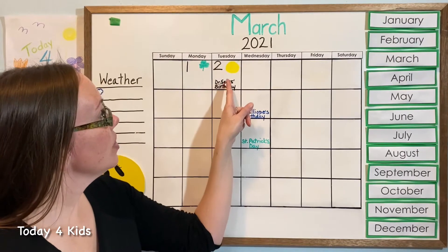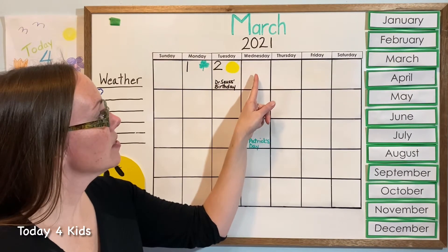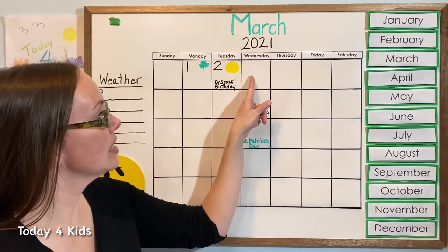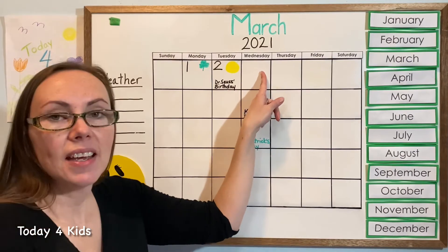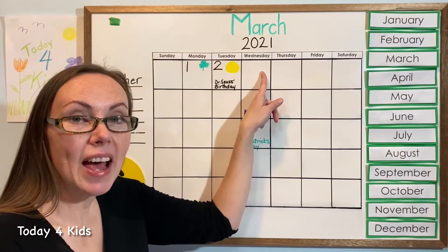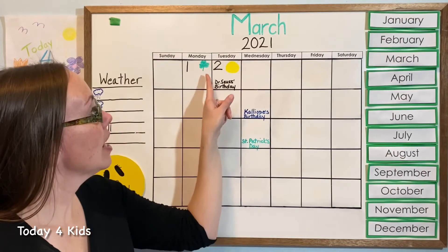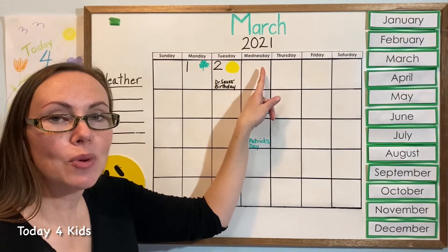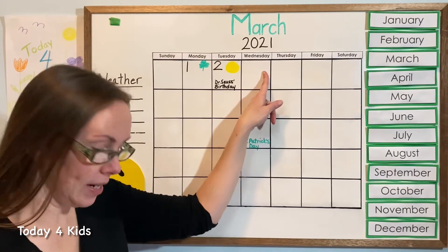So yesterday was this square and we're going to move over one square, because we always go left to right, and this is going to be today. So we want to put in the next pattern. And I'm going to be a little tricky — I'm going to change our pattern today. So instead of going shamrock, coin, shamrock, I'm going to put a coin there, and this is going to be called an ABB pattern.